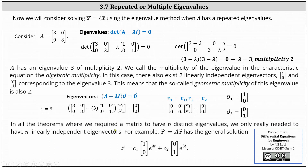In all the theorems where we required a matrix to have n distinct eigenvalues, we only really needed n linearly independent eigenvectors. For X prime equals AX, in this case the general solution is X equals C1 times eigenvector V1 times e to the 3t, plus C2 times eigenvector V2 times e to the 3t. Again, this only works because we were able to find two linearly independent eigenvectors, which will not always be the case.